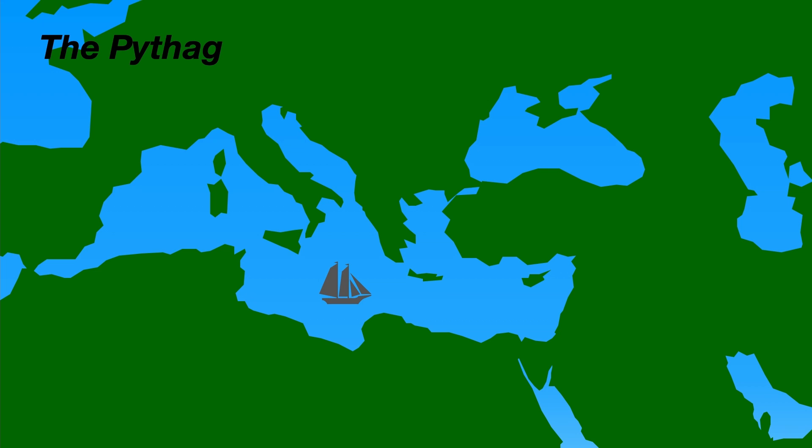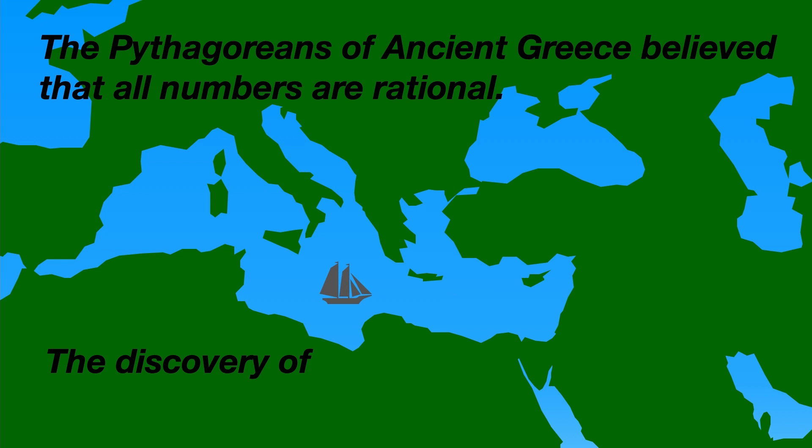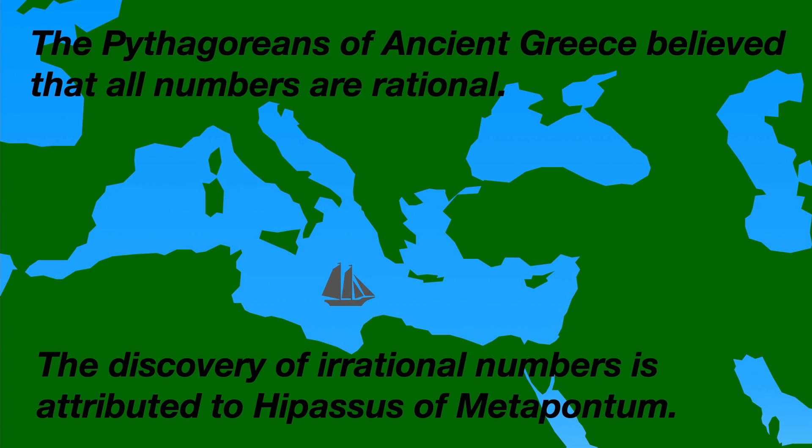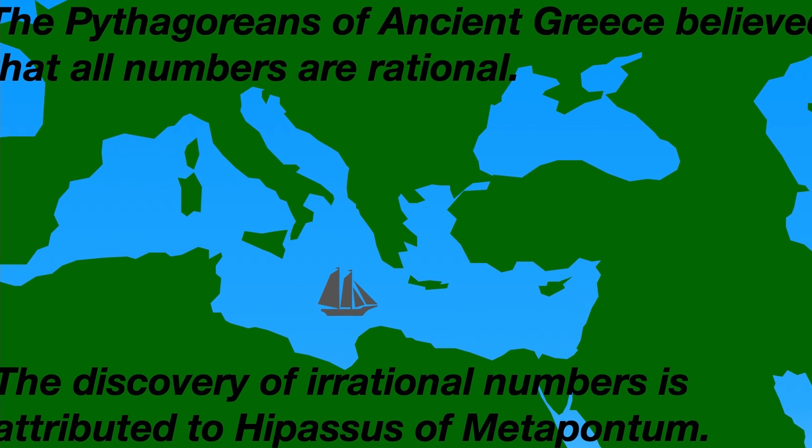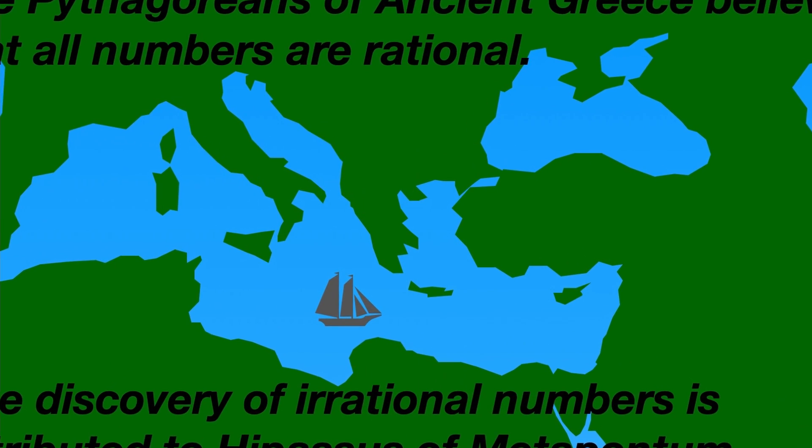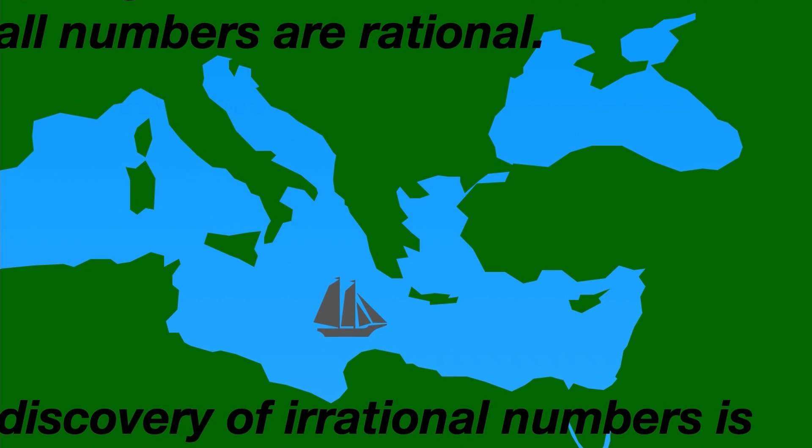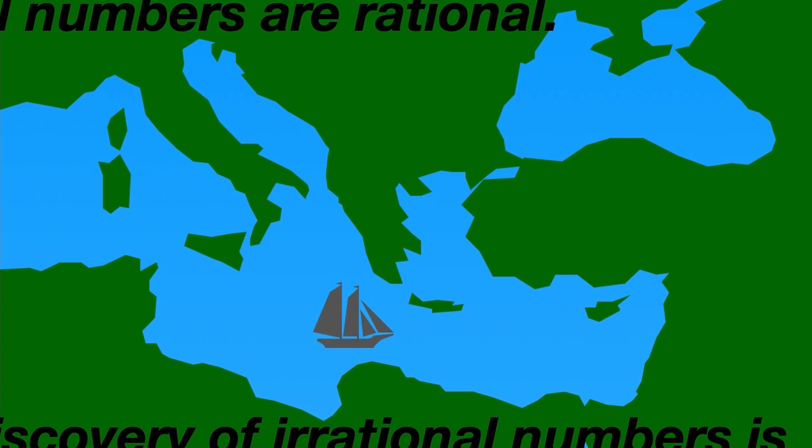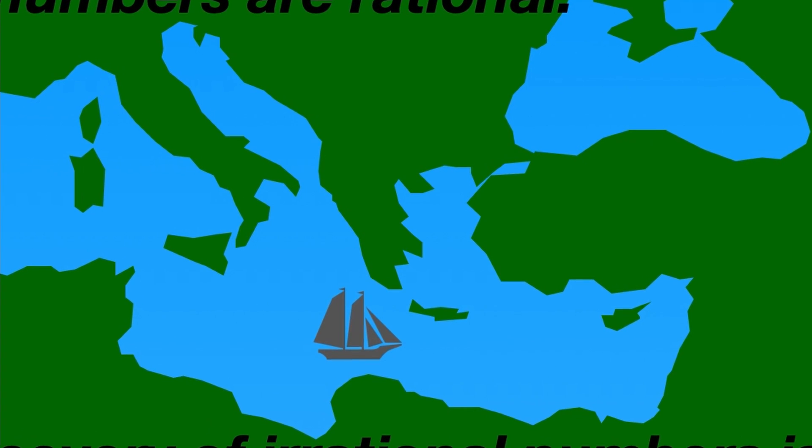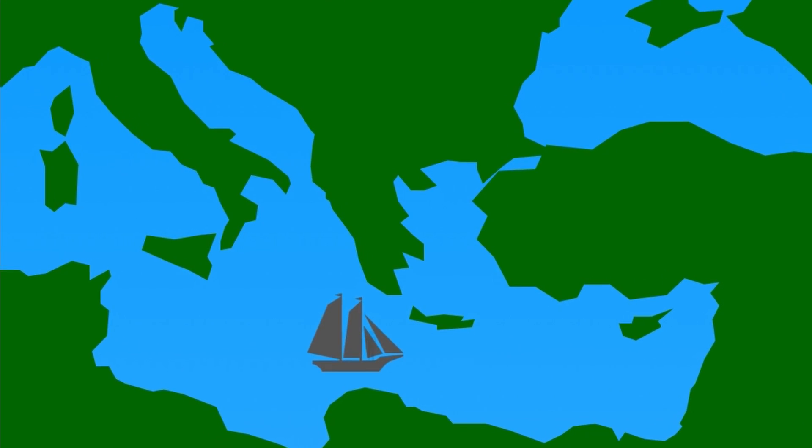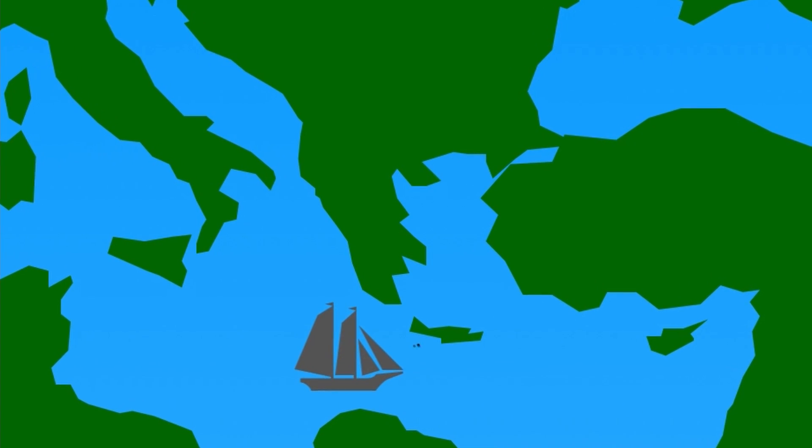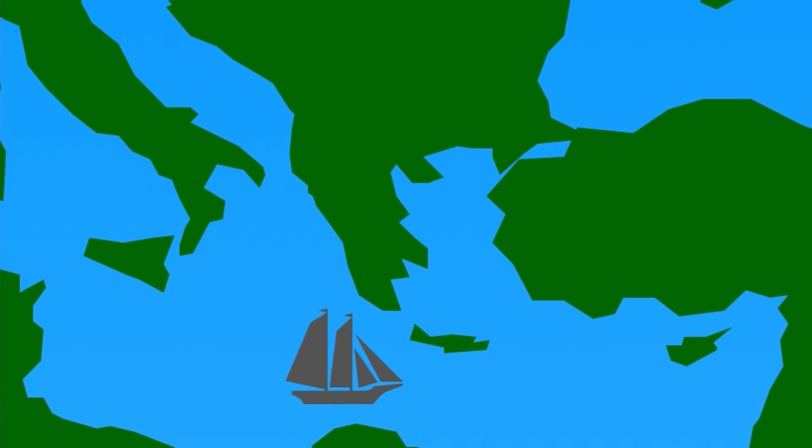The Pythagoreans of ancient Greece believed that all numbers are rational. And the discovery of irrational numbers, numbers that aren't rational, is attributed to Hippasus of Metapontum, who himself was a Pythagorean. One legend says that he made the discovery whilst at sea, and the Pythagoreans were so enraged they threw him overboard. The irony is that Pythagoras' theorem itself can lead us directly to irrational numbers.